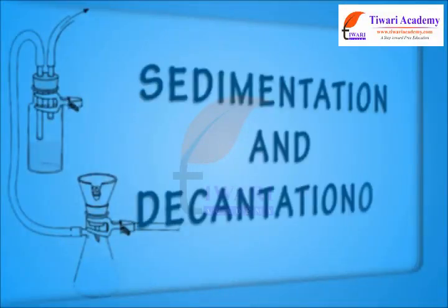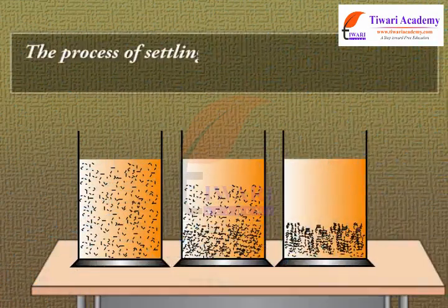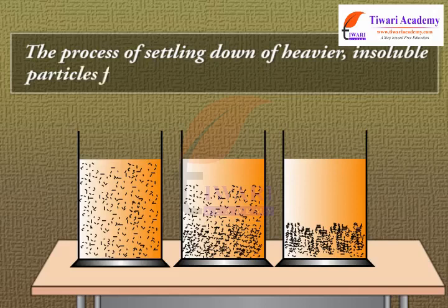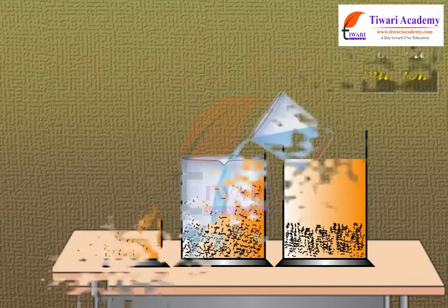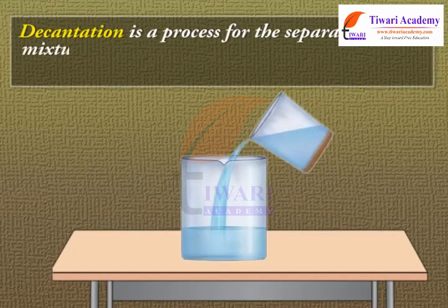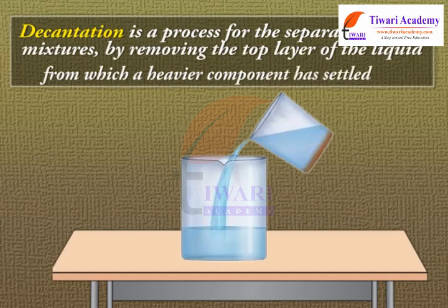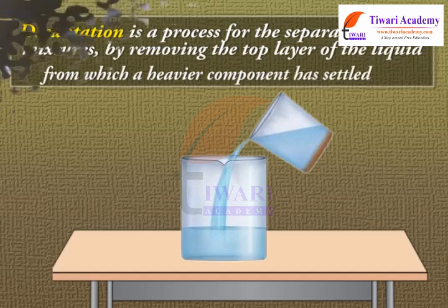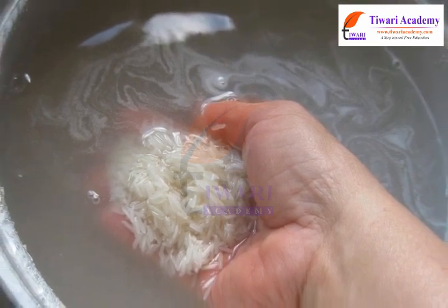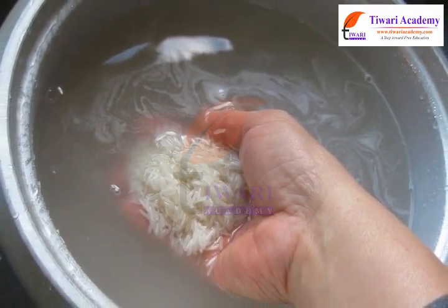Sedimentation and decantation. The process of settling down of heavier insoluble particles from a mixture is called sedimentation. Decantation is a process for the separation of mixtures by removing the top layer of liquid from which a heavier component has settled. Lighter impurities like dust or soil particles in rice or pulses are removed by sedimentation.